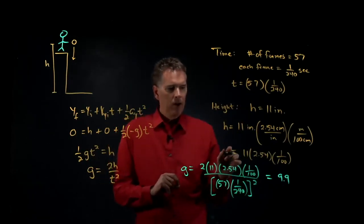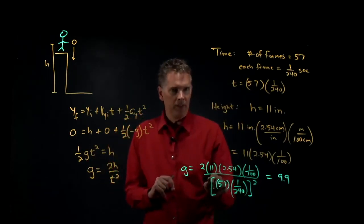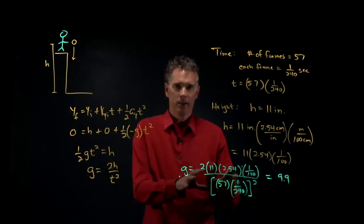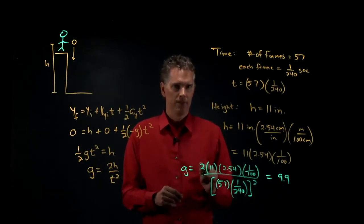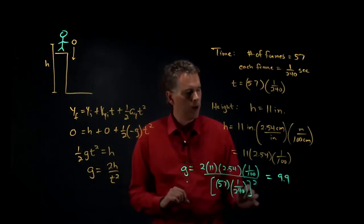If I think about moving this number from 57 to 58, what do I calculate for g? If I go to 56, what do I calculate for g? Those are your error bars.